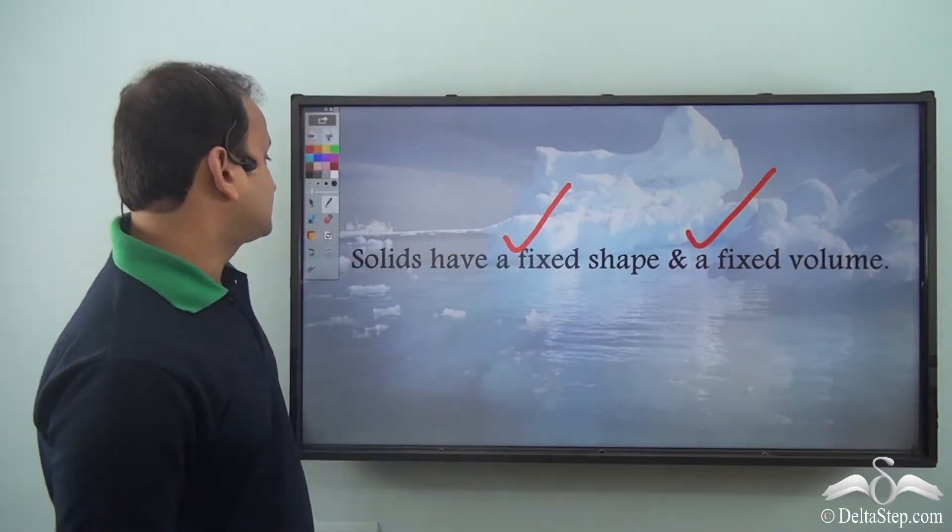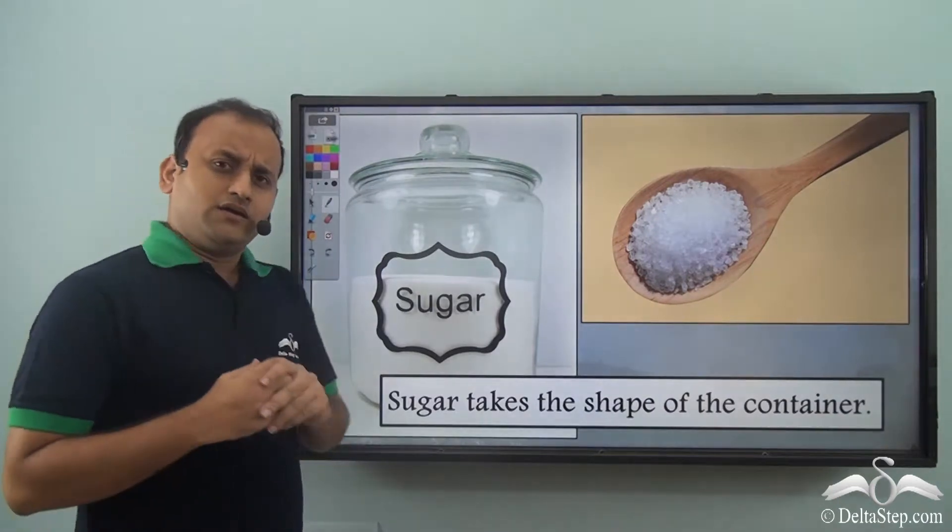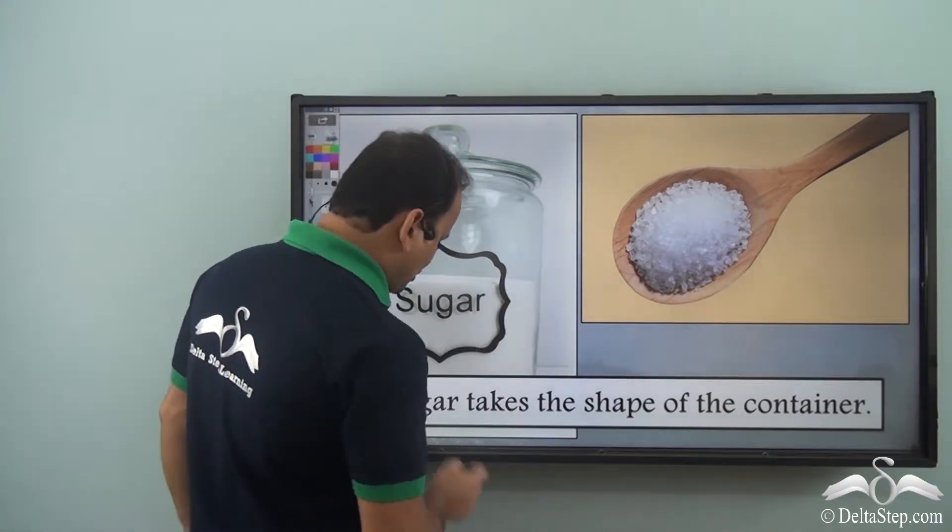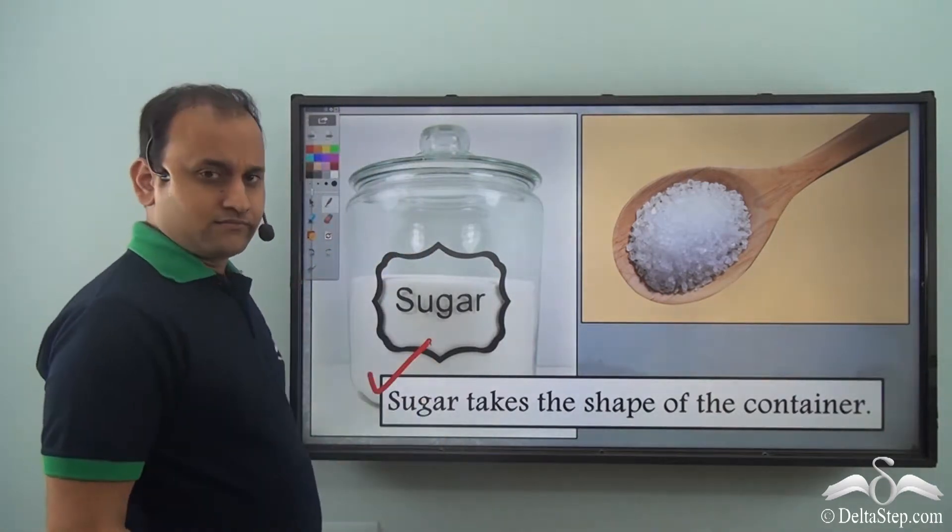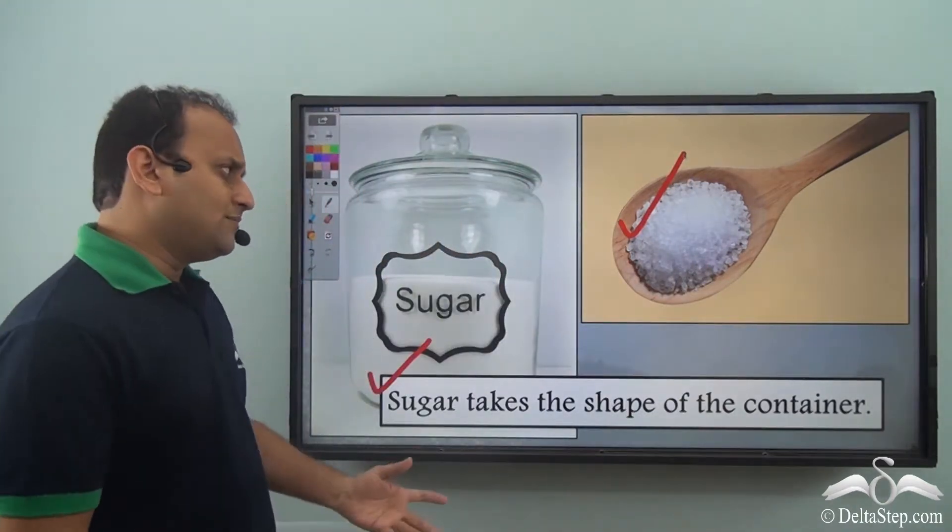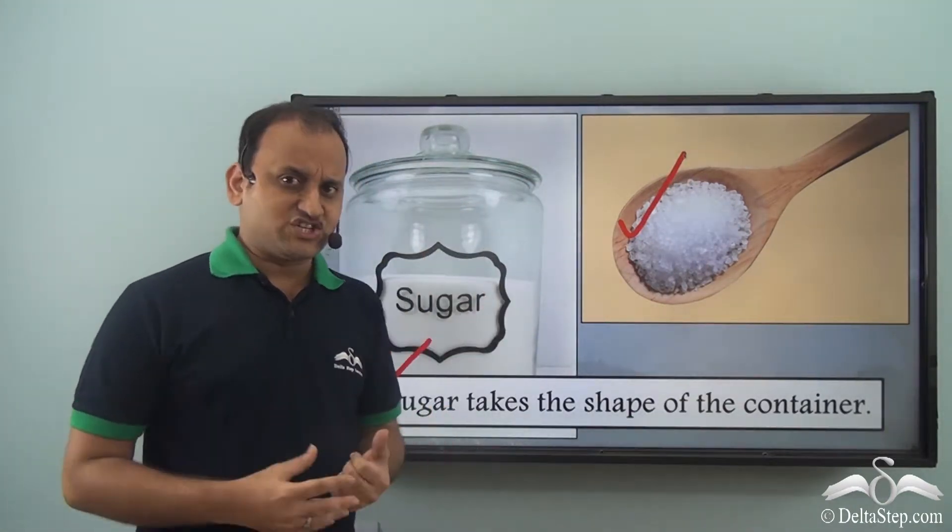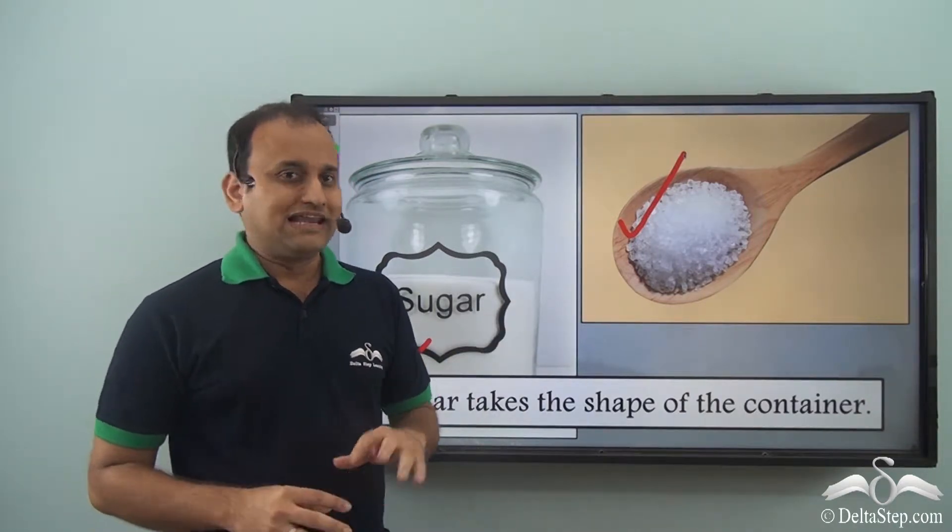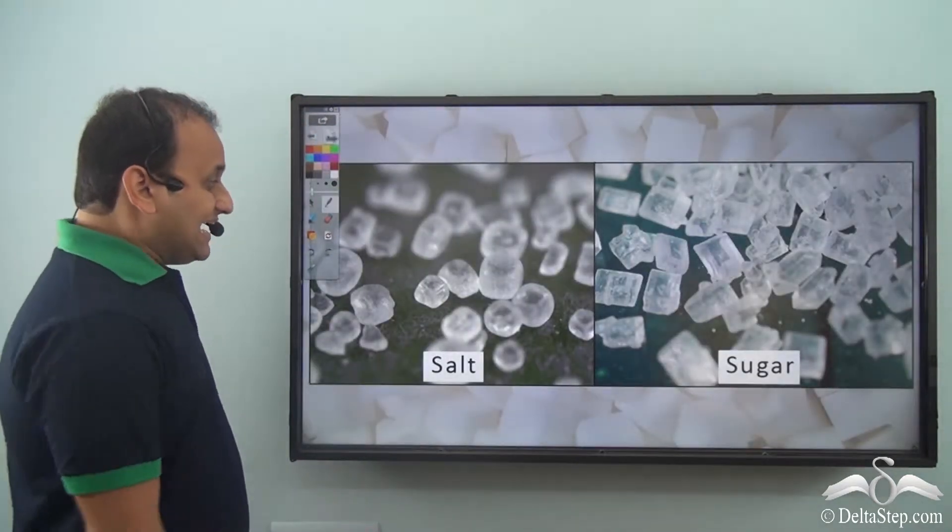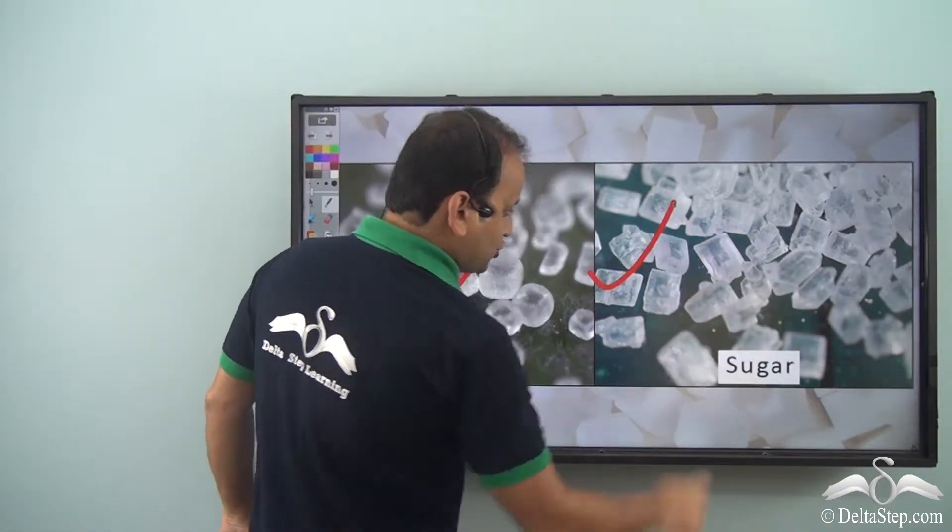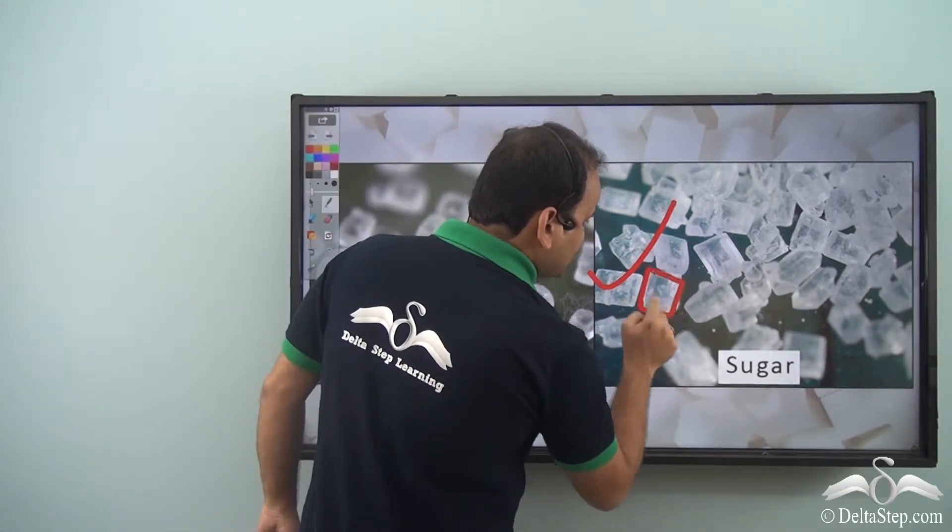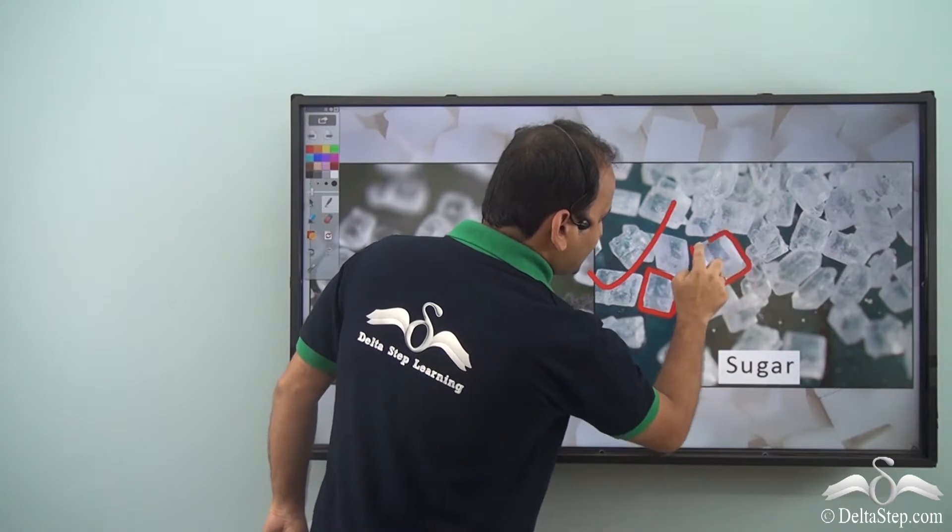Also, if you see sugar, you must be thinking that usually sugar takes the shape of the container, and as I mentioned, even sugar is a solid. So how come if it is solid and it has a fixed shape, it takes the shape of the container? Well, let's look closely. You see these are the crystals of salt and sugar. Now you see these crystals have a fixed shape, like a geometrical shape.